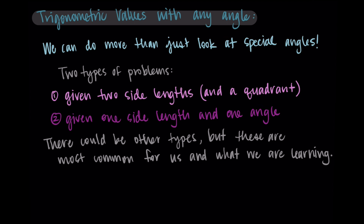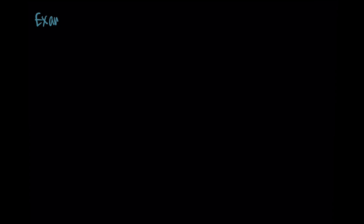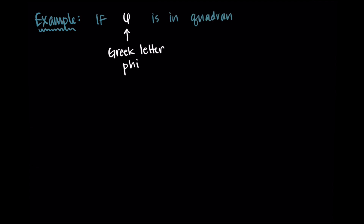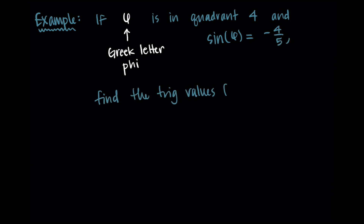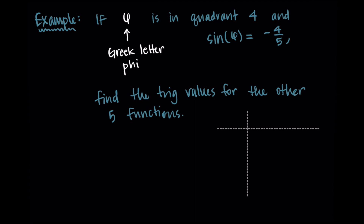Let's do a first example. I'm also going to introduce some new Greek letters for angles rather than just theta. For this example, let's say we have an angle phi — this symbol here is the Greek letter phi. Let's say this angle is in quadrant four and we know that sine of phi is negative four-fifths. I'm going to draw a triangle in quadrant four where the hypotenuse is where the terminal side of the angle would be.